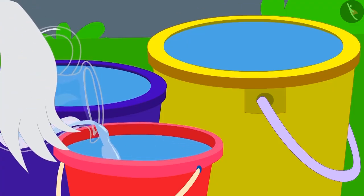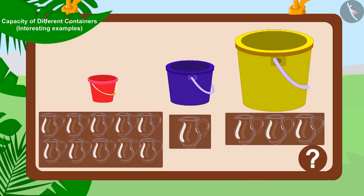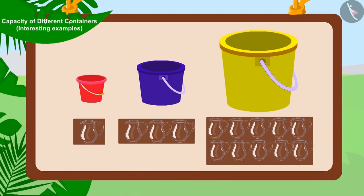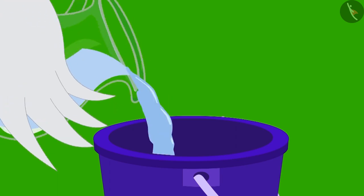Now uncle filled the buckets of Bunny, Kagu, and Appu using his jugs. Can you guess and match these buckets to their right capacity? You can stop the video to find the answer. Well done, children! Bunny's bucket capacity is equal to about one jug, Kagu's bucket capacity is equal to about three jugs, and Appu's bucket capacity is around ten jugs.